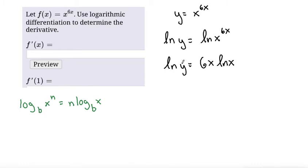Notice that I haven't taken the derivative yet — I'm just simplifying so that I can use one of my derivative rules. From here, we can use the product rule because we have 6x multiplied by the natural log of x. Also remember that y is a function of x, so when we take the derivative of y, we have to multiply by y prime using the chain rule or implicit differentiation.